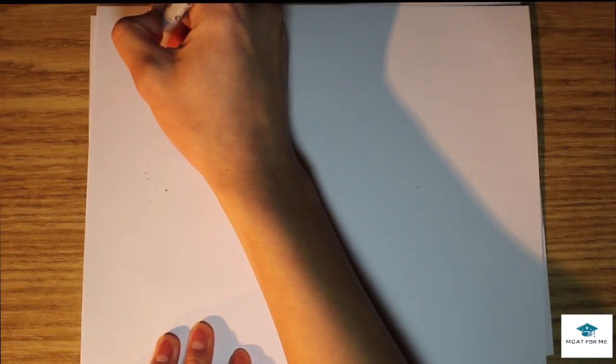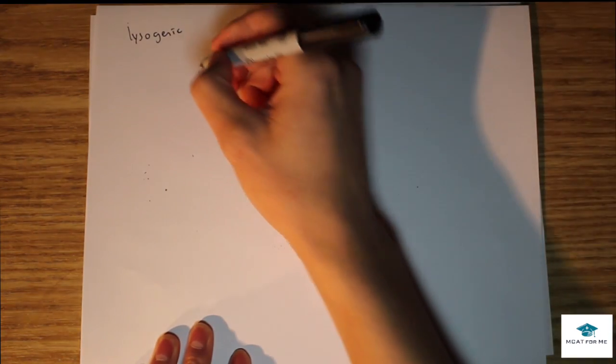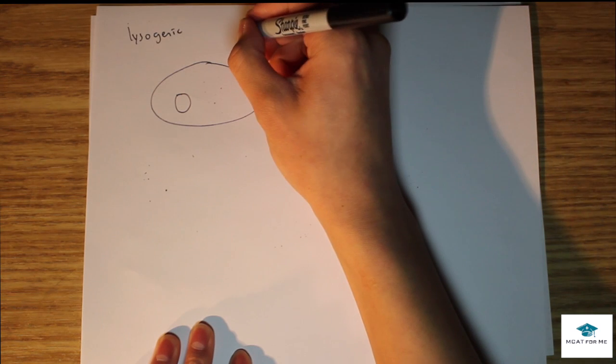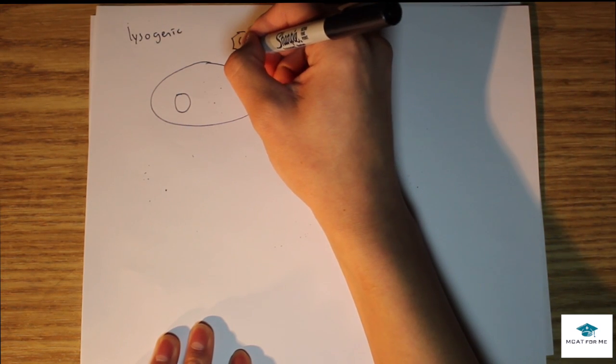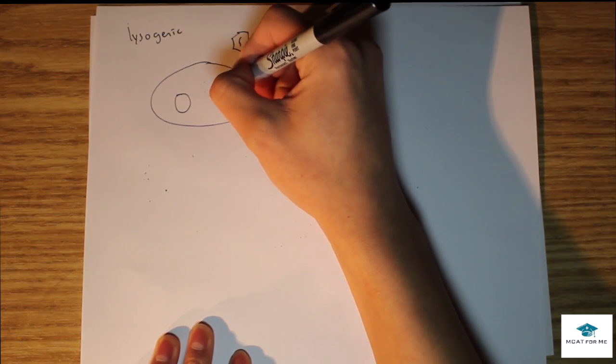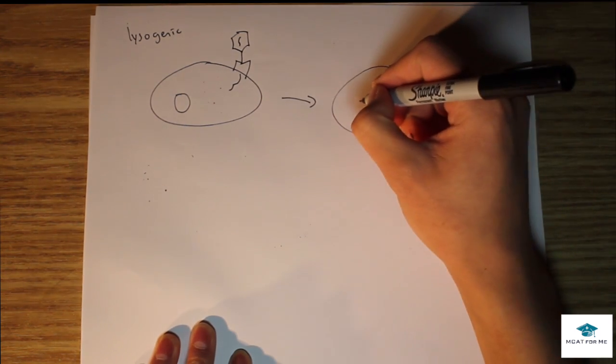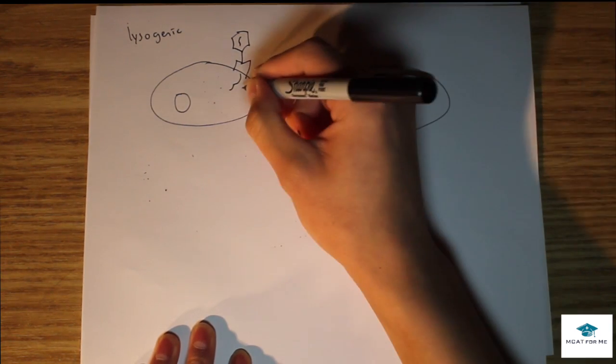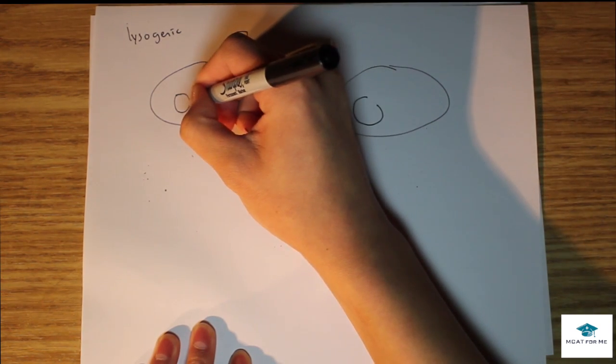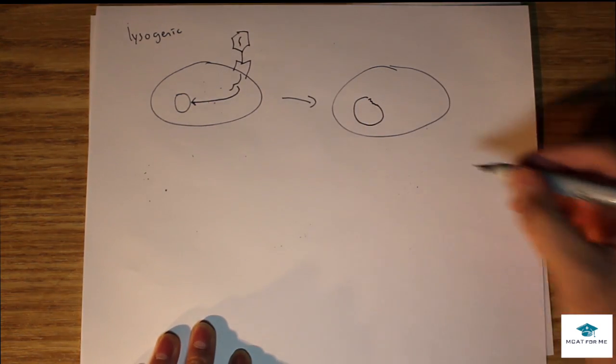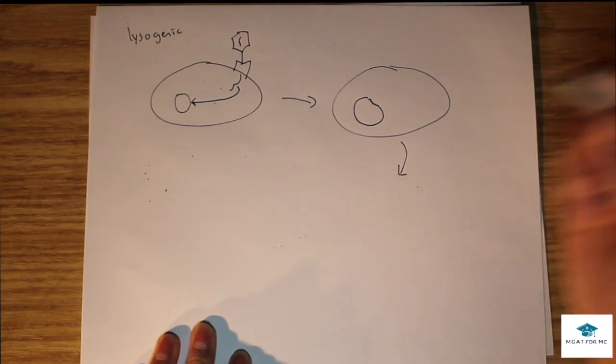The next thing we're going to be looking at is the lysogenic life cycle. Lysogenic like we said was like a latent lifestyle for viruses. Same, we're just going to use the bacteria and we have this virus like that. It does the same injection and now after that, if you can imagine this DNA that is from the virus is going to be inserted here. So let's just draw it with a squiggly line like that.